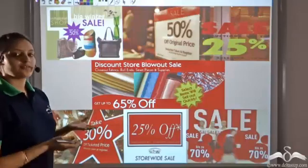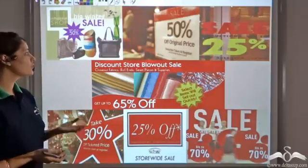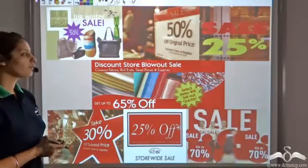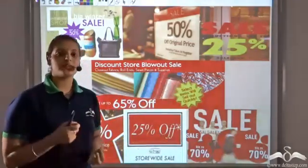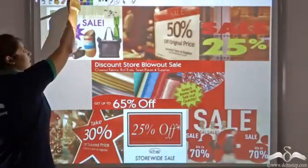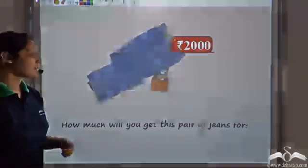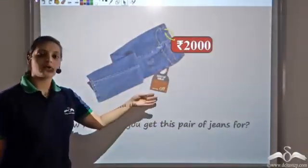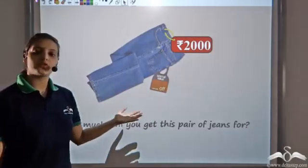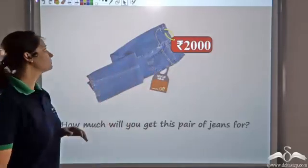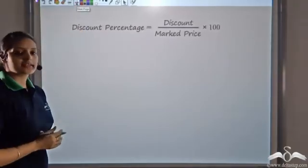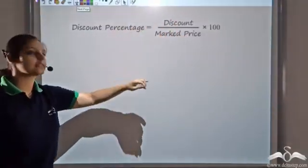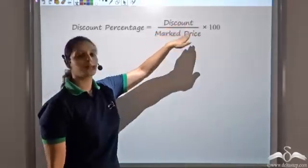Discount percentages are commonly seen during festival seasons or clearance sales — you will see discounts such as 20%, 30%, or 65% off. So Rajiv also gives a discount percentage in his store. There is a pair of jeans marked at Rs.2000 with a discount of 25%. The question is: how much will you pay for these jeans? That is, find the selling price. Discount percentage is always calculated on the marked price.